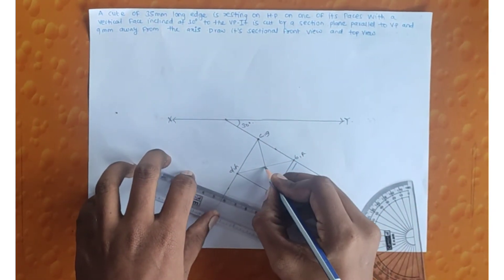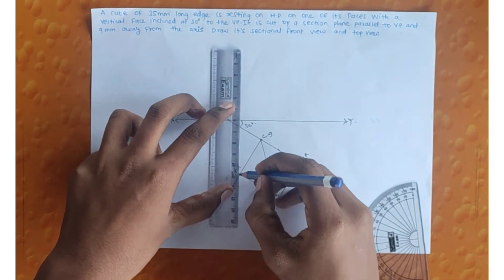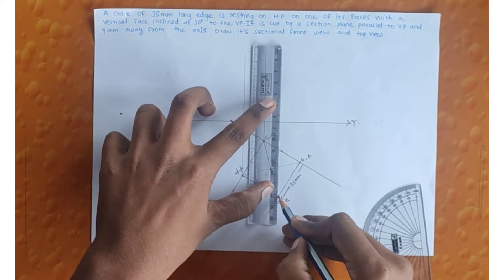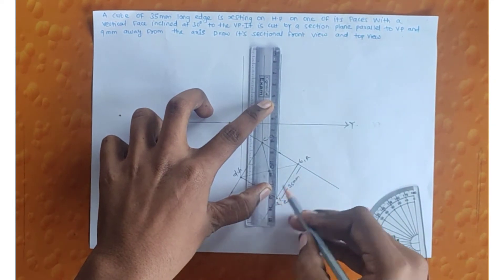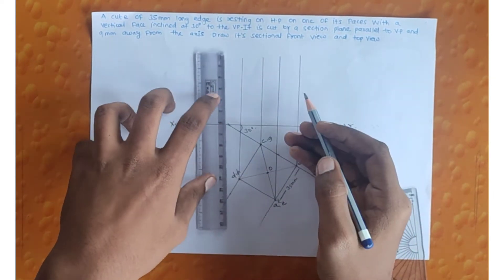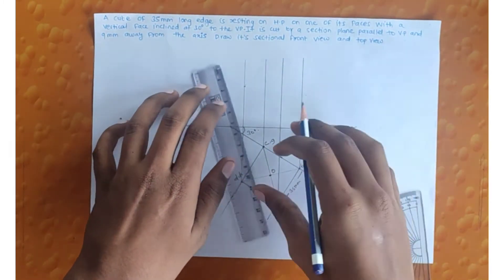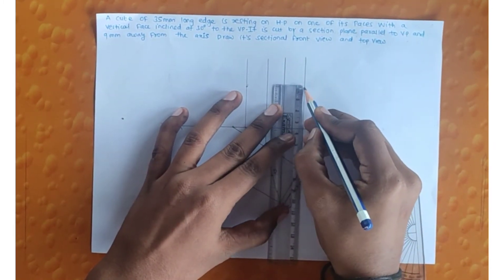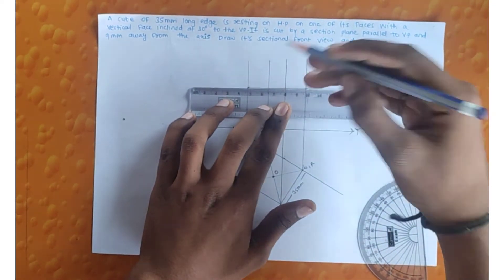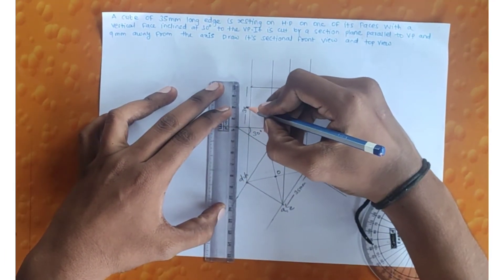This is the axis — consider it as O. Now for getting the front view, draw the projections from each point. At this cube the side is given 35 mm, so this distance is 35 mm.